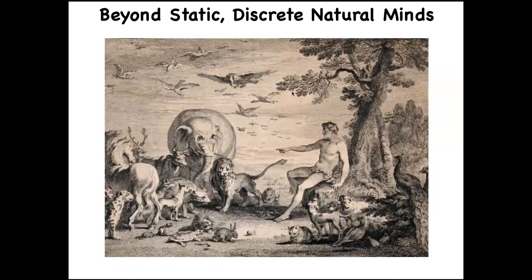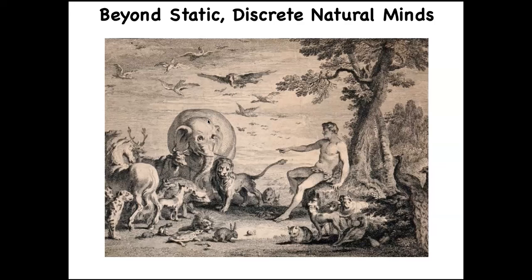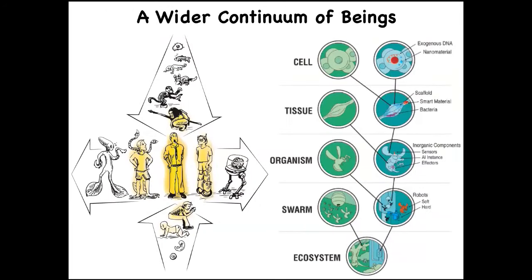One place to start is with this old image of Adam naming the animals in the Garden of Eden. There are two important things here: a set of discrete natural kinds meant to be specific agents, and Adam — different from the others — whose role is to name them. As you'll see, naming something is in a sense to discover its true nature.